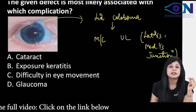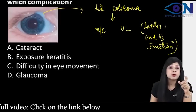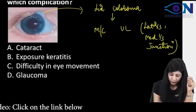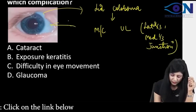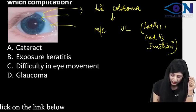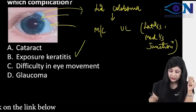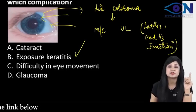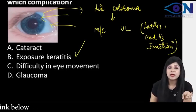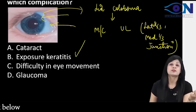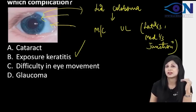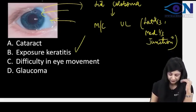Because we have the lid coloboma, there is absence of tissue, so more radiation will be going through from here. Therefore, it can cause exposure keratitis. It is a lid coloboma — therefore, more defect means more chances for exposure keratitis.